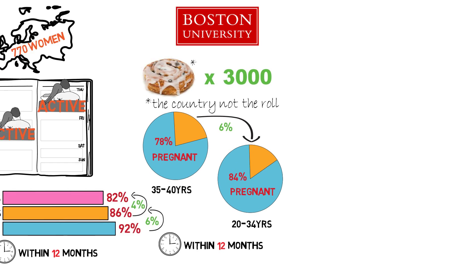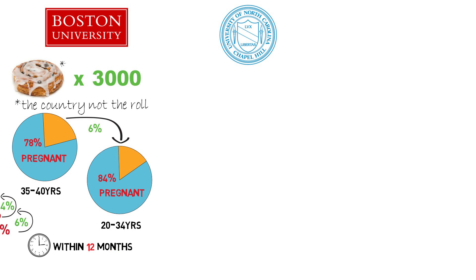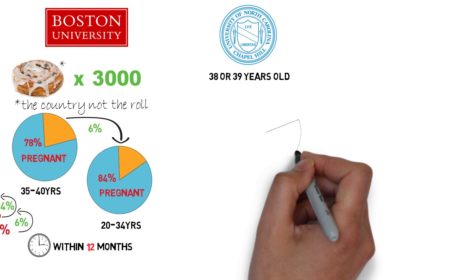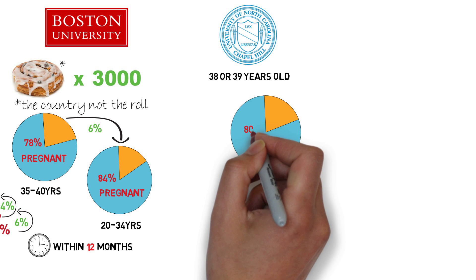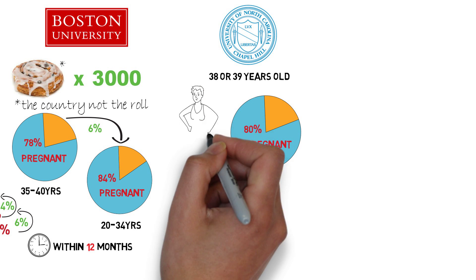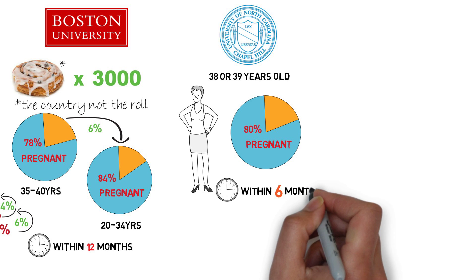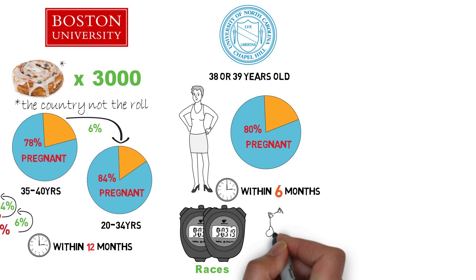A third study from the University of North Carolina focused just on older women, women 38 or 39. It found that 80% of white women in this age bracket who were not overweight got pregnant within 6 months, with lower results for other races or people who are overweight.